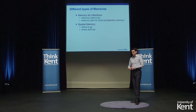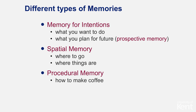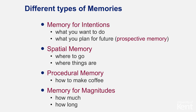There are also memories about space — how to get to the kitchen or where different things are. Those are spatial memories that are important for navigation. We also have procedural memory: how you make coffee or even walking, which is a very automatic form of procedural memory. And finally, memories for magnitudes — how much coffee you would like, or how long you would like to wait for your coffee to be prepared.